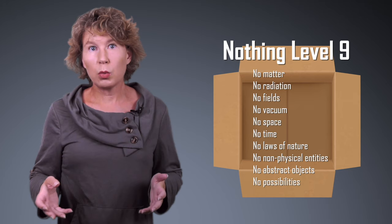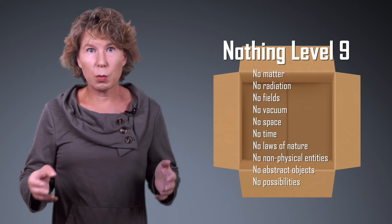Well, there's still the possibility that something comes into existence even if that something doesn't exist. And a possibility is something in and of itself. So for level 9, we also remove all possibilities. This is Kuhn's final level of nothing. It's the best nothing I can give you for your birthday. I hope you're happy now.